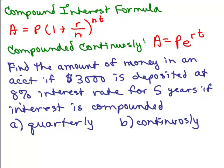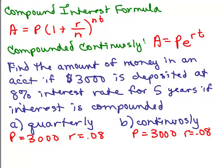Let's do quarterly first. What do we know? P, in both cases, is 3,000. And the rate is 8%. Now, rate, we need to write as a decimal, so 8% is .08. And let's see, the time is five years for both of them. That's all we need to do part B, but to do part A, quarterly, that means how many times a year? Quarterly is four times a year. So, that's N. N is 4.